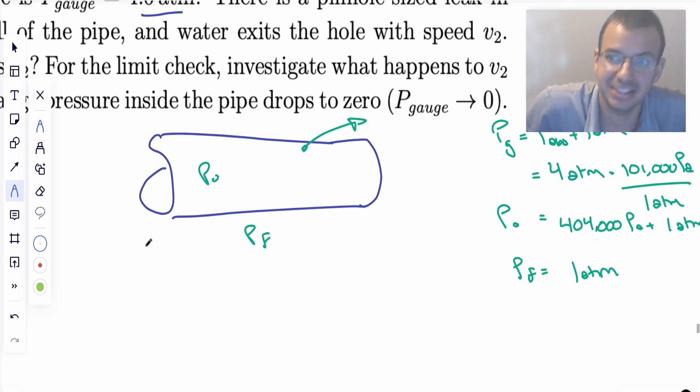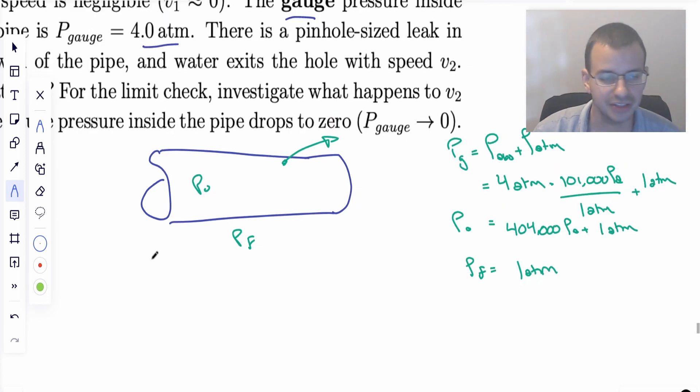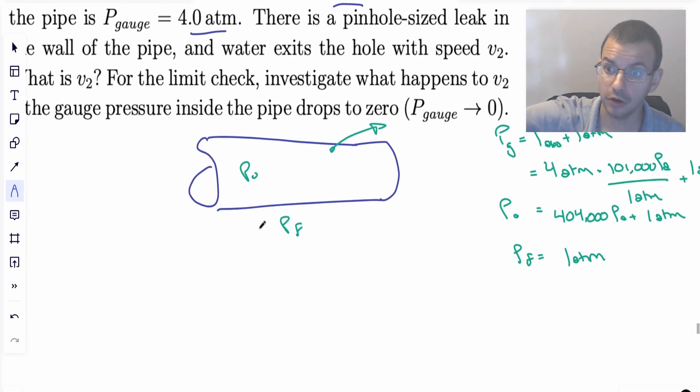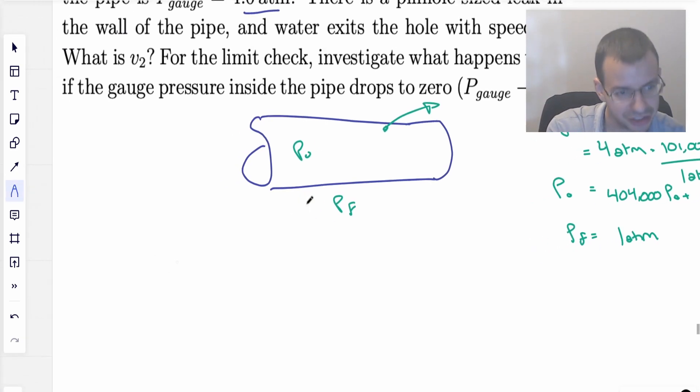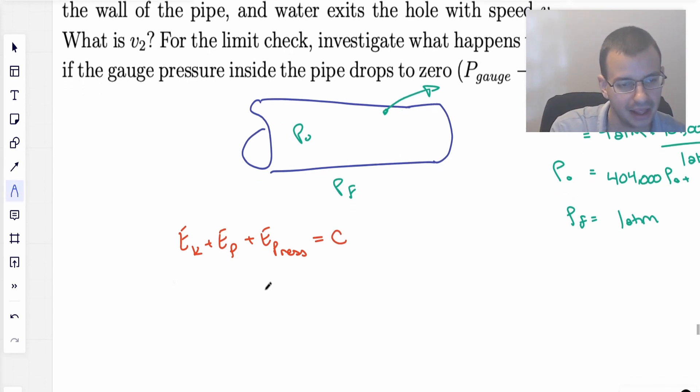So this is basically a Bernoulli's question. Bernoulli's is just conservation of energy. I have a memory of a goldfish. So I try to memorize as few formulas as possible. So I'm just going to do conservation of energy. So you have energy kinetic plus energy potential plus I'm going to say energy pressure equals some constant. By constant, I mean you can say the initial equals final. So I'm going to write that out just a little bit differently. One half MV squared plus MGH, plus pressure times volume.